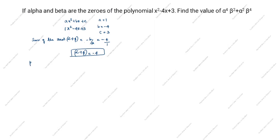Next, product of zeros: alpha beta equals c by a. Here c is 3 and a is 1, equal to 3 by 1. So alpha beta is equal to 3.